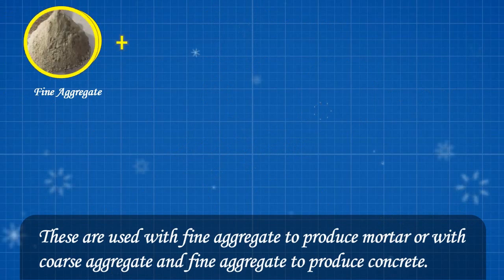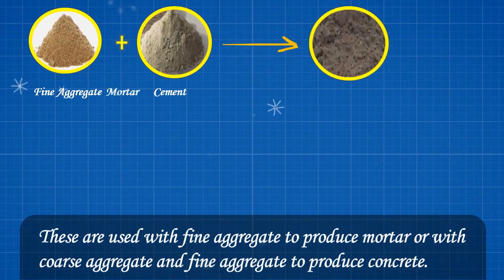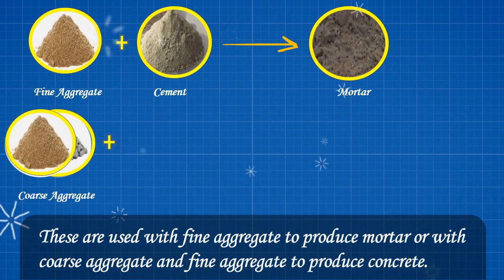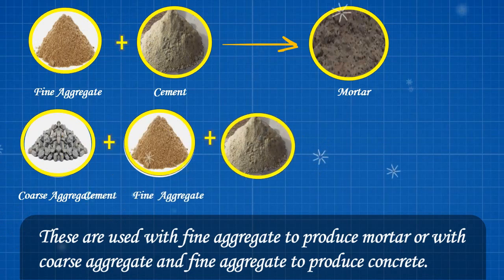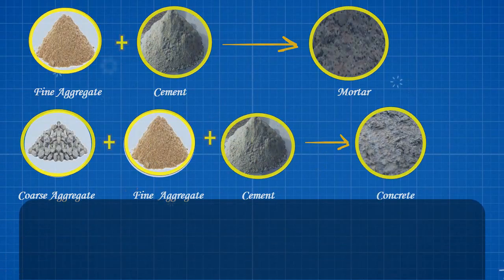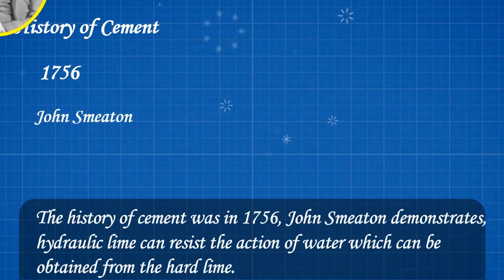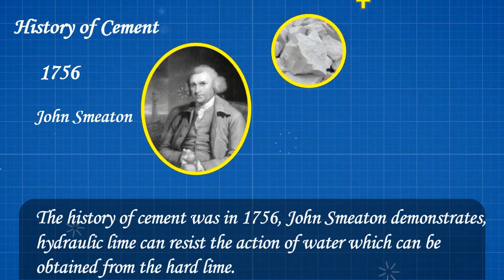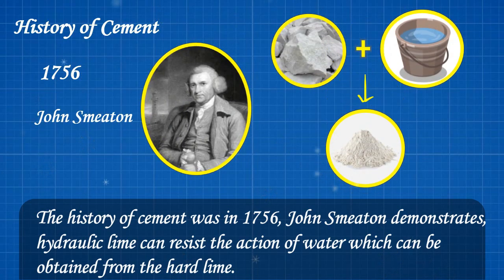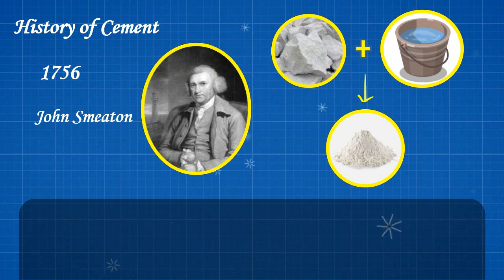These are used with fine aggregate to produce mortar, or with coarse aggregate and fine aggregate to produce concrete. The history of cement dates to 1756, when John Smeaton demonstrated that hydraulic lime can resist the action of water, which can be obtained from hard lime.